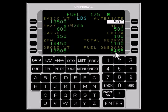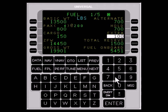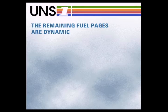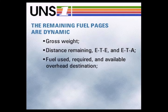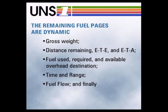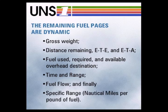Use the LINE SELECT keys to enter ALTERNATE, HOLD, and/or EXTRA fuel to compute the total reserves, or to enter the total reserves directly. This figure is used in later fuel pages. The remaining fuel pages are dynamic — they provide flight plan and fuel information for the flight in progress based on the entries in fuel page 1 of 5. Information included is: gross weight, distance remaining, ETE and ETA, fuel used, required, and available overhead destination, time and range, fuel flow, and specific range in nautical miles per pound of fuel.